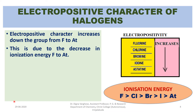Ionization energy is the energy required to remove an electron from an isolated gaseous atom, causing the atom to become a positively charged species. The ionization energy has a lower value for astatine, so the electropositivity character of astatine is higher — it has the highest electropositive character among halogens.